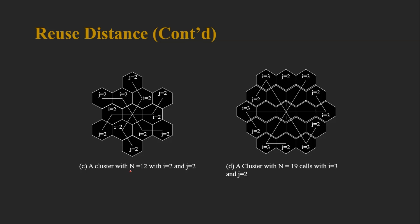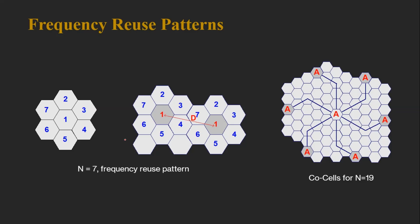For example, with N=12 (i=2, j=2), moving two steps at 60 degrees and then two steps straight gives the co-cell center. For N=7 (i=2, j=1), from the reference cell move one step at 60 degrees then two steps straight to locate the co-channel cell. For N=19 (i=3, j=2), we move accordingly to find the co-channel cell.